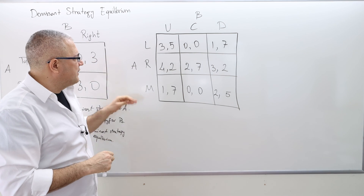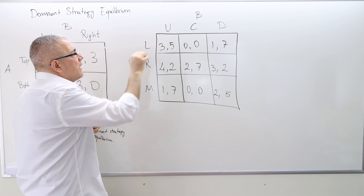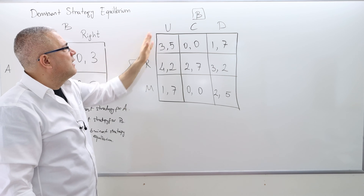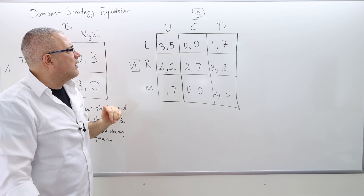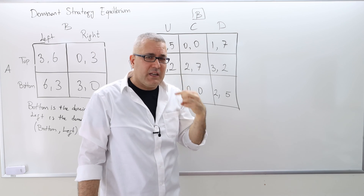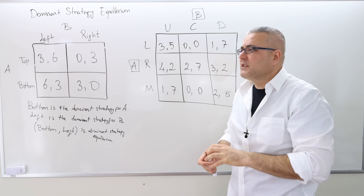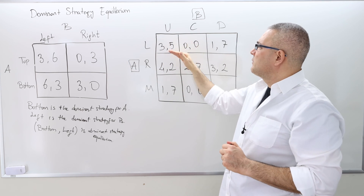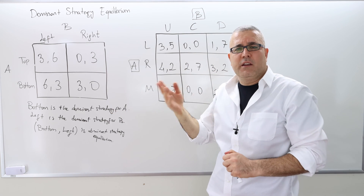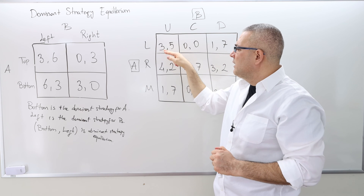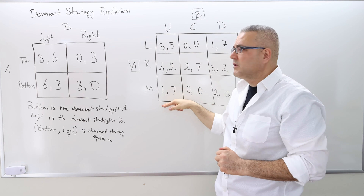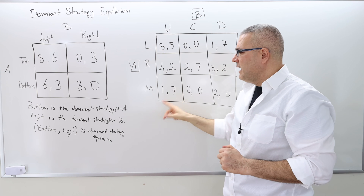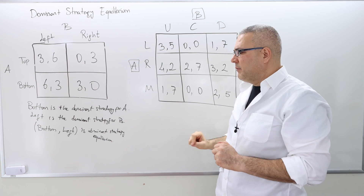In the second game, we still have two players, A and B. The actions are named L, R, M (left, right, middle) for one player and U, C, D (up, center, down) for the other, making it a three-by-three matrix since each player has three actions. The approach is still the same: the first numbers belong to player A, the second to player B. For player A, we compare the first numbers across rows; for player B, the second numbers across columns. Let's find the dominant strategy for each player, then find the dominant strategy equilibrium.